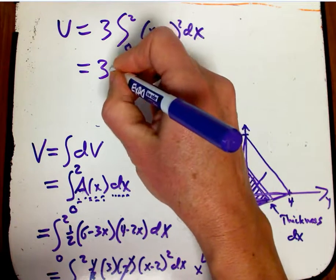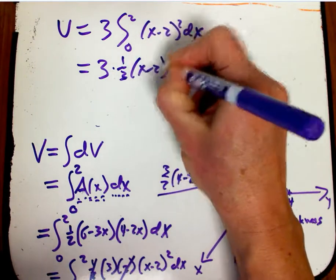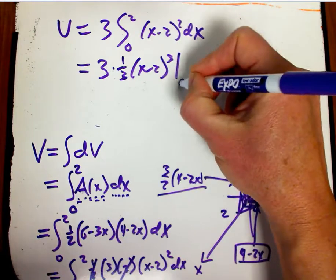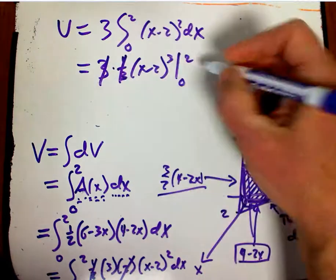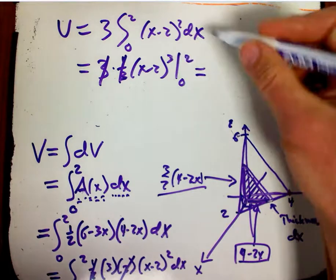And it just becomes 3 times 1 third times x minus 2 cubed, from 0 to 2. Hey, that cancels out. How nice. And that just ends up being 8.